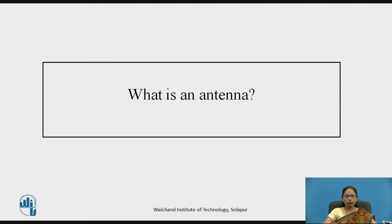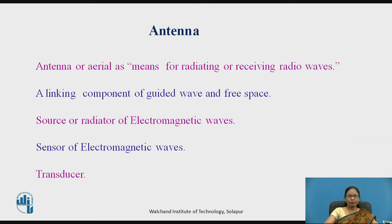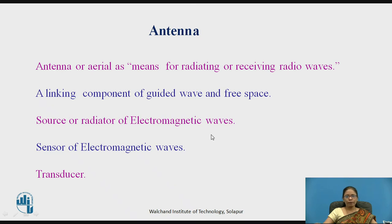Before I move further, let us discuss what is meant by an antenna. An antenna, or aerial, is a means for radiating or receiving radio waves. It is a linking component of guided wave and free space wave, and a source or radiator of electromagnetic waves — that refers to the transmitting antenna. It is also a sensor of electromagnetic waves — that refers to the receiving antenna. Antenna acts as a transducer between the transmission line, that is a guided wave, and the free space wave.